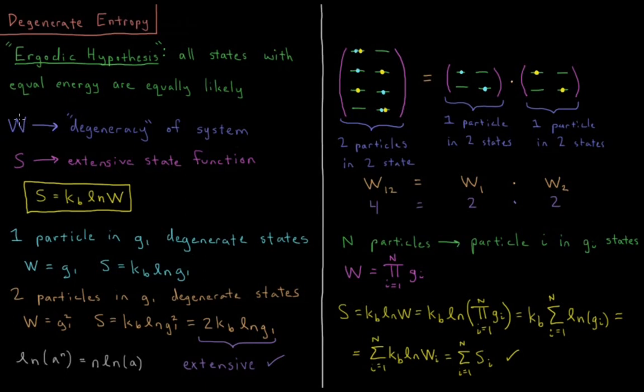We have this factor W, which is the degeneracy of the system—how many states there are at this given energy level that we're looking at. W would be what we would be calling G from statistical mechanics earlier. And we said that entropy should be an extensive state function.